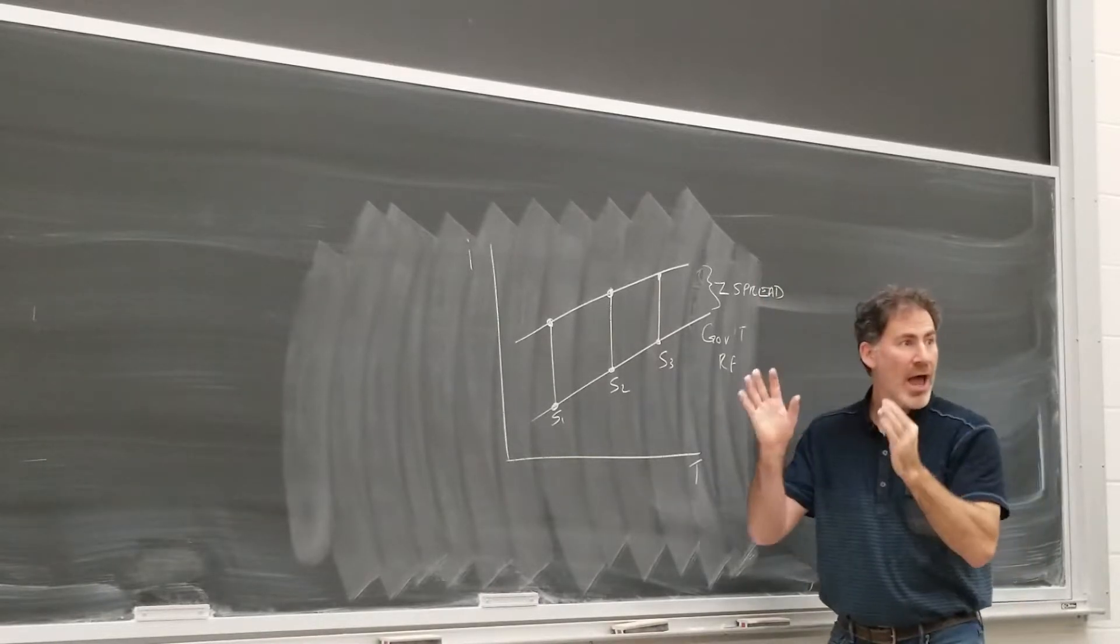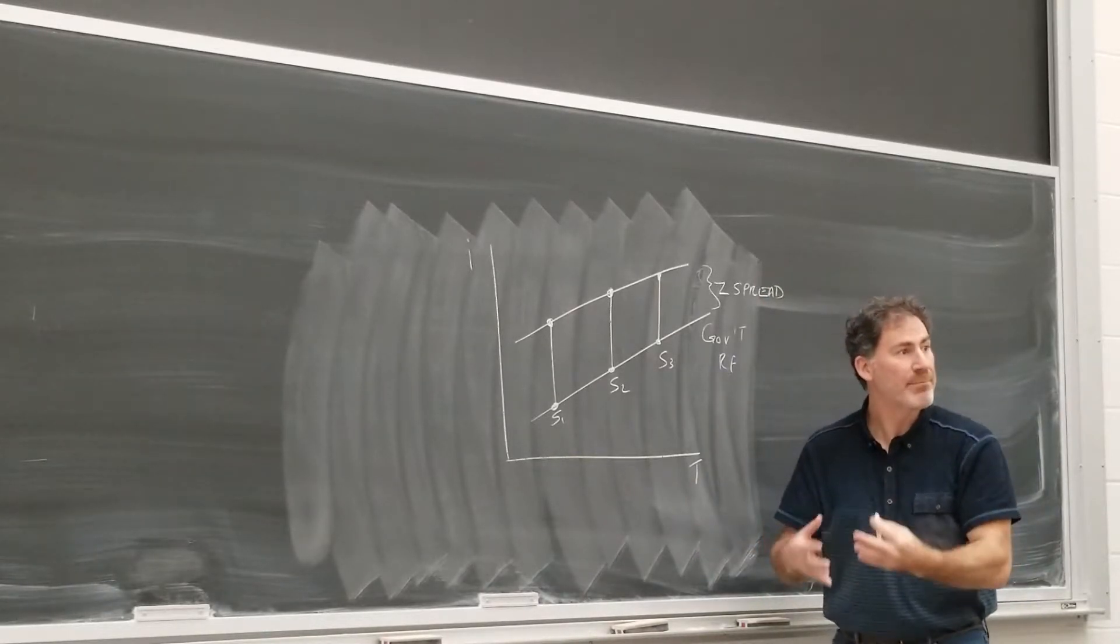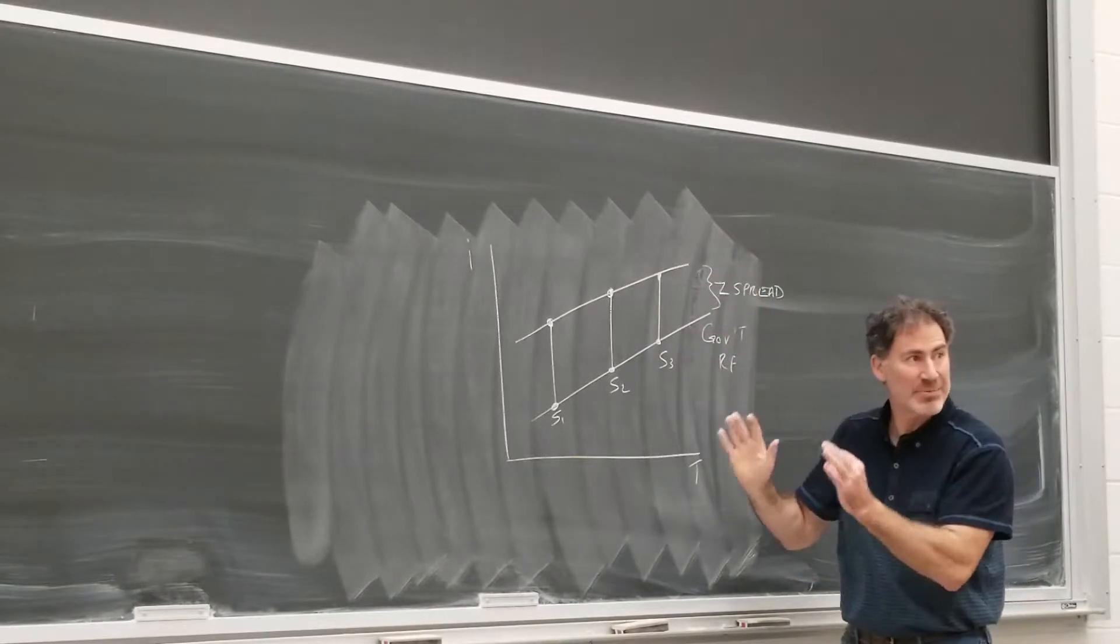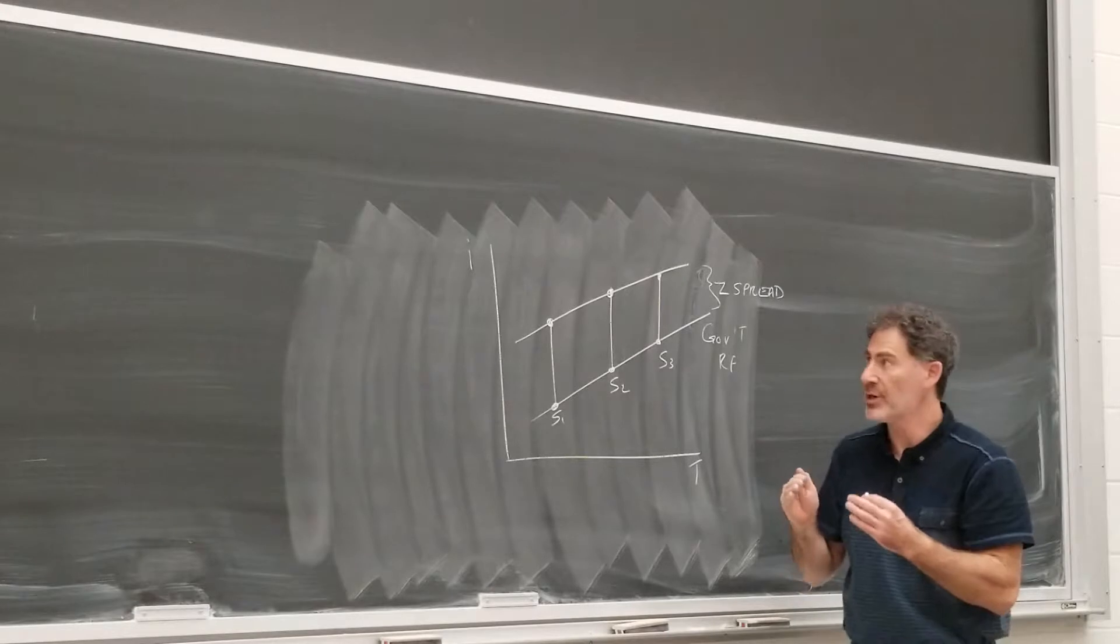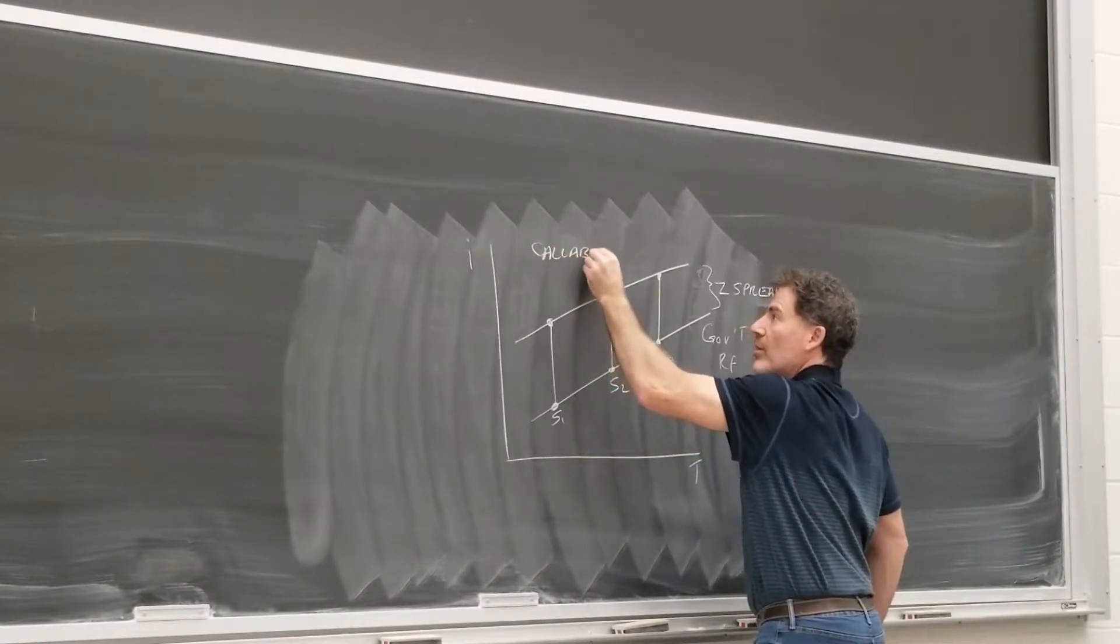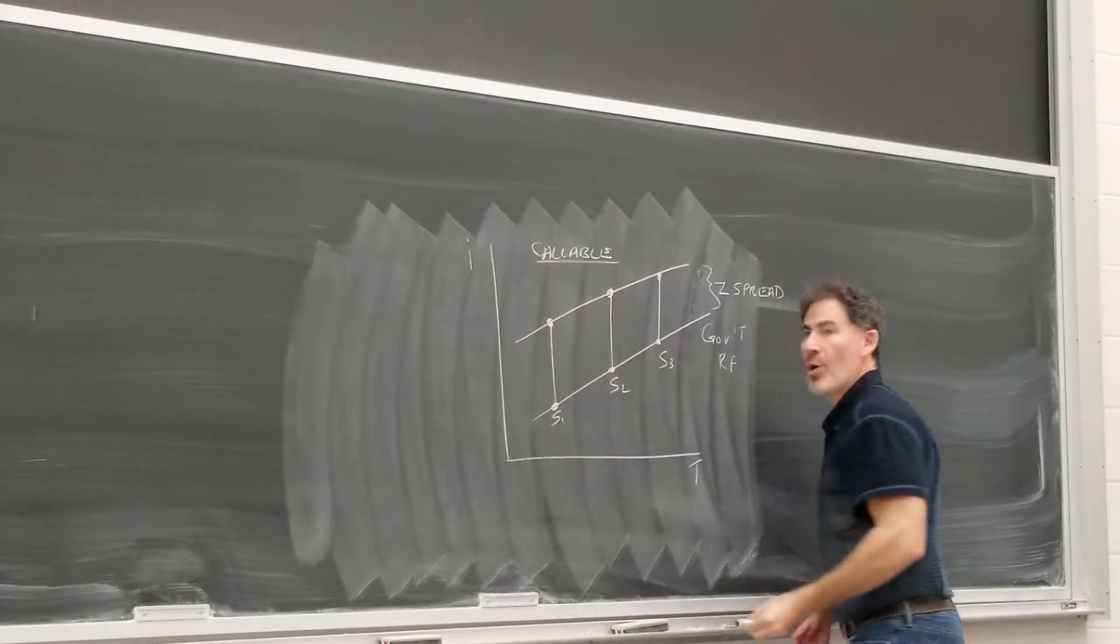So, now, if we have a bond with an embedded option, we need to adjust this Z spread to remove the value of an option. So let's talk about a callable bond. Callable bond. So what am I going to do?